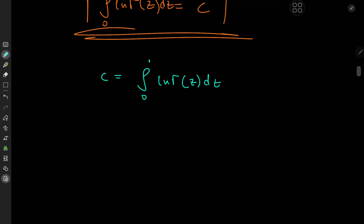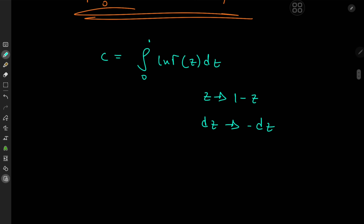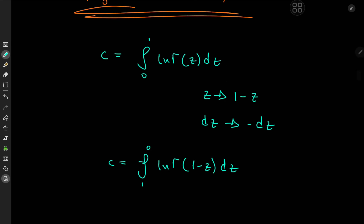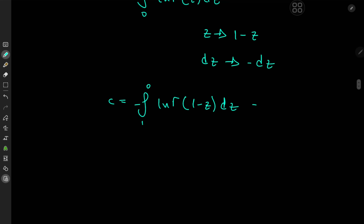We invoke a substitution going from z to 1−z, which takes dz to −dz and switches the limits of integration: zero turns into one and one turns into zero. So C also equals the integral from zero to one of log gamma(1−z) dz, after accounting for the sign change from swapping limits.